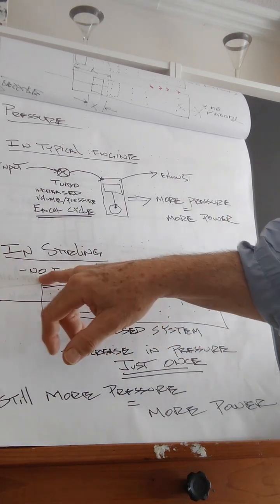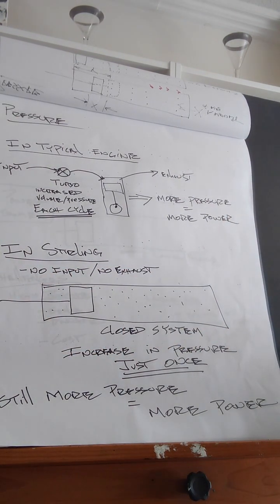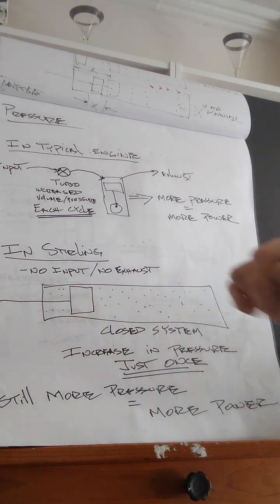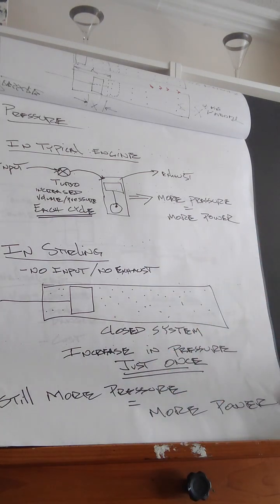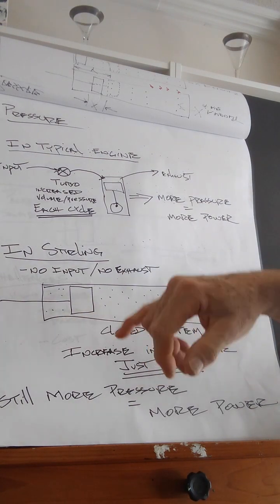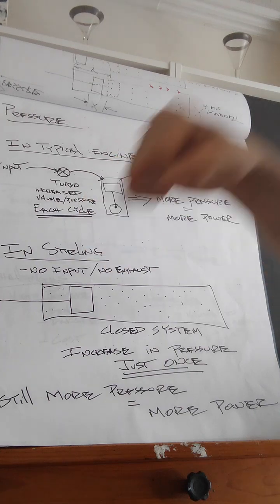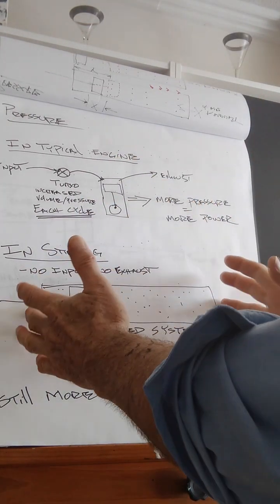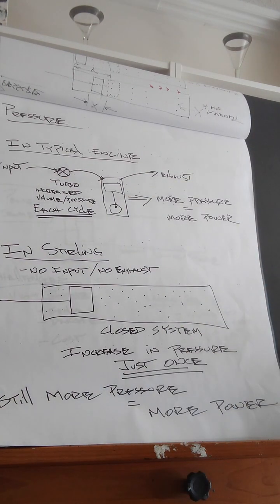In a Sterling engine, the beautiful thing is there's no intake, there's no exhaust—it's a sealed system. But yet that same law applies, that same rule applies: if I have more stuff in here, more air, and I heat it with the same amount of heat, I'm going to get more expansion, more power, more pressure. And the beauty of this is, instead of an internal combustion engine where you have to jam that in each cycle, every time the piston moves, here I just do it once. I pressurize the whole system and my power output goes up.